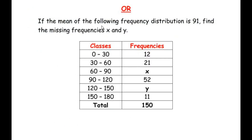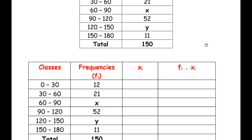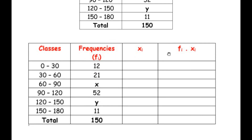Now for the OR question: if the mean of the following frequency distribution is 91, find the missing frequencies x and y. The table has grouped data with total frequency 150 and two missing frequencies x and y. We redraw the table with columns for classes, frequencies, class marks xi, and the product fi × xi. The class mark is the midpoint: (lower limit + upper limit) / 2.